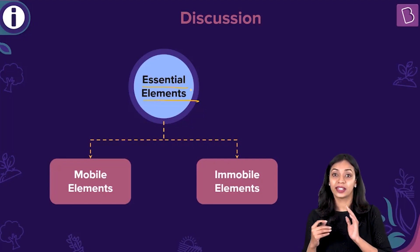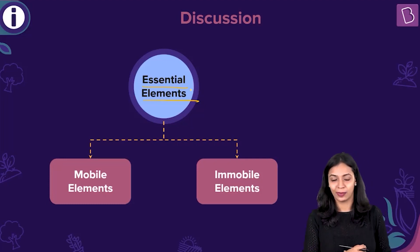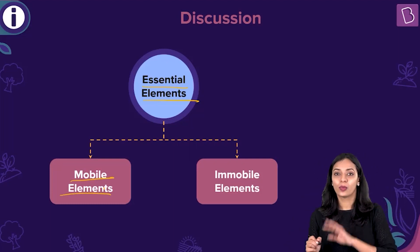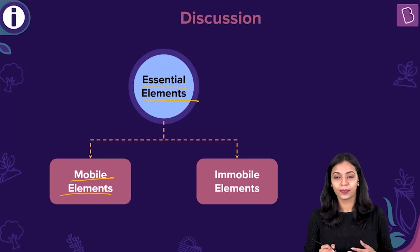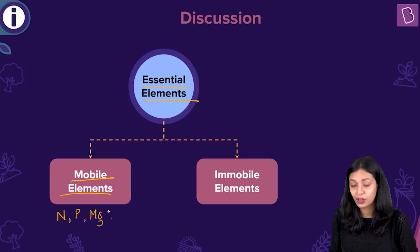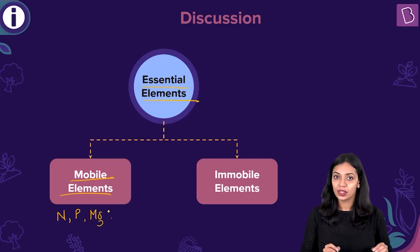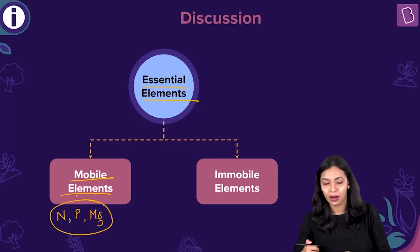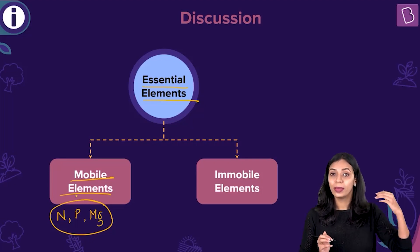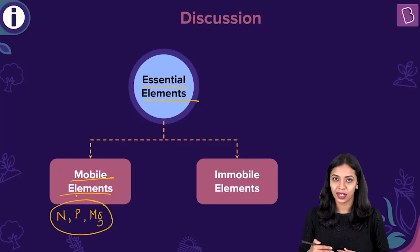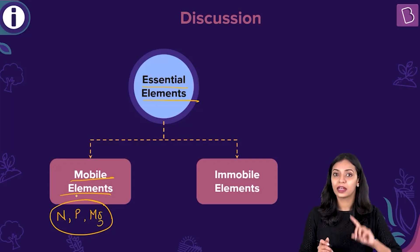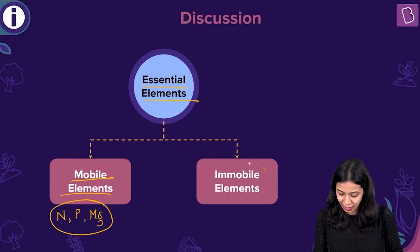Mobile elements can easily be transported from one part of the plant to another. Elements like nitrogen, phosphorus, and magnesium are considered to be mobile elements. Whenever there is a deficiency of these mobile elements in the soil, the magnesium present in older leaves or older tissues will be mobilized to younger tissues where nutrients are required. Whenever there is a deficiency of mobile elements, the deficiency symptoms will first appear in older tissues.